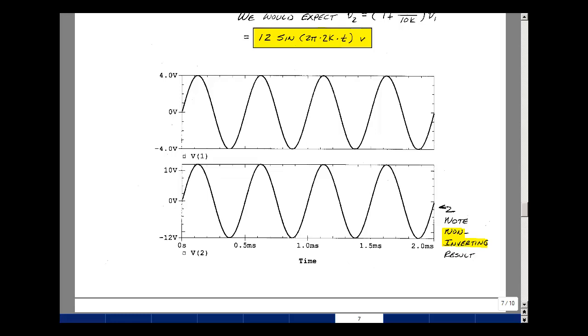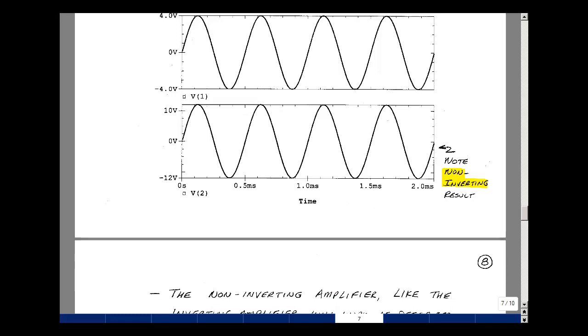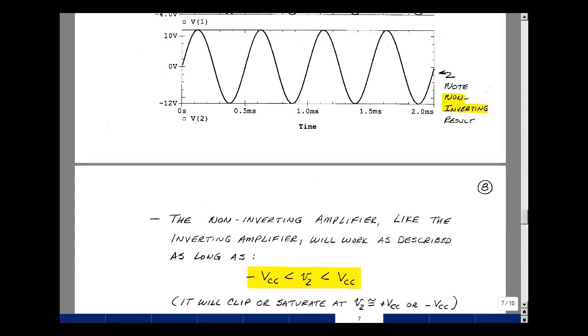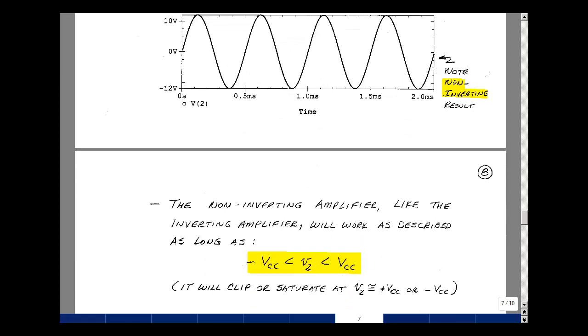Now, just like the inverting amplifier, everything works fine, provided that you don't exceed the value of the power supply. If you do, the output will clip off at about the power supply value. And this is how a non-inverting amplifier works.